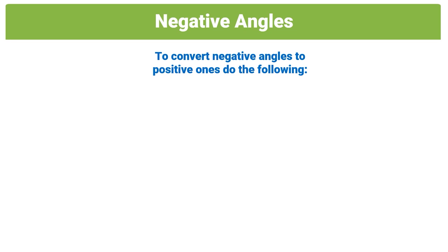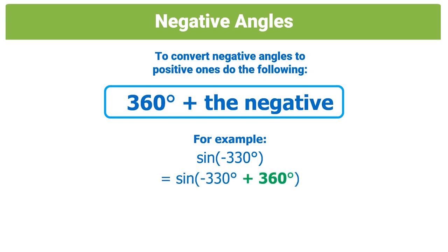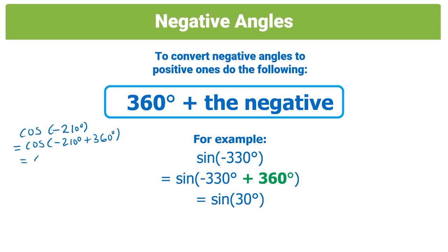In trigonometry we have negative angles, and whenever you see one it's a good idea to convert it to its positive twin by adding 360°. For example, sin(−330°): add 360° to get sin(30°). Another example: cos(−210°) + 360° = cos(150°).